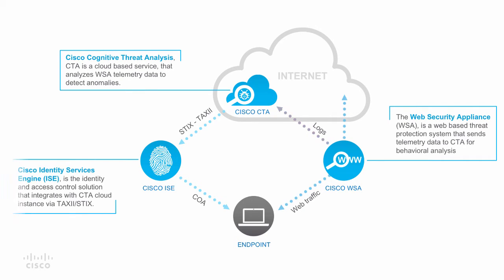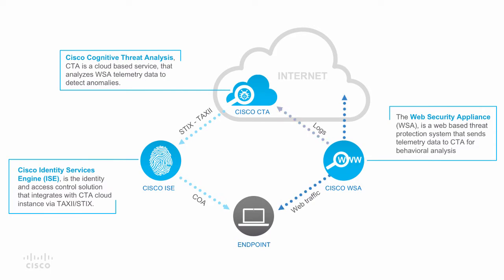The Cisco Identity Services Engine, ISE, is an identity access solution and integrates with the CTA cloud instance via TAXII and STIX, which is a standard for exchanging cyber threat information. ISE receives these CTA incidents and is able to take ANC adaptive network control mitigation actions on the endpoint by issuing course-of-action authorization policies.